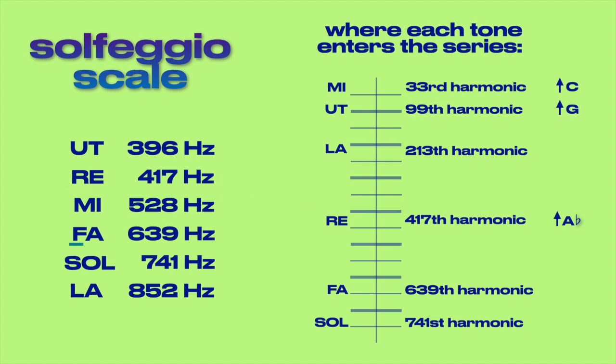Fa at 639 Hz enters the series in the 639th harmonic as a flat E note, or a flat major third off the tonic of C.